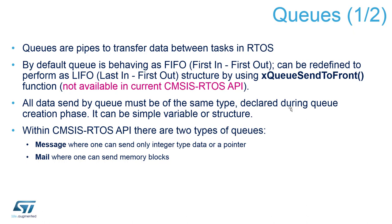The default functionality of the queue is FIFO — first in, first out. So if you put numbers one, two, and three into the queue, they will be read back as one, two, and three. However, the queue allows changing the order of elements, because you can send data not to the end but to the beginning of the queue. This is useful for priority messages that need to be processed first.